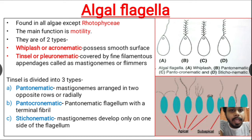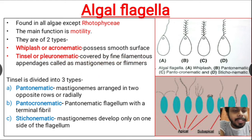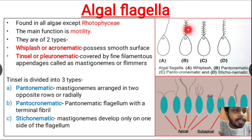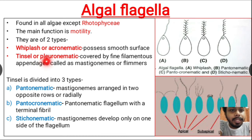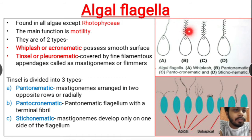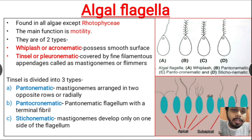The tinsel or pleuronomatic type of flagella is covered by fine filamentous appendages called mastigonemes. These filaments present on two opposite sides laterally are known as mastigonemes, and they are characteristic of tinsel or pleuronomatic flagella. Because of these filaments, pleuronomatic flagella are also known as hairy flagella.